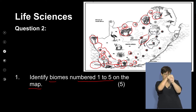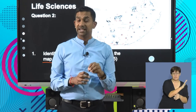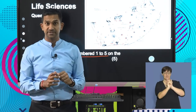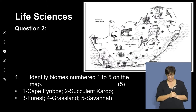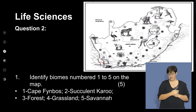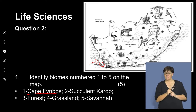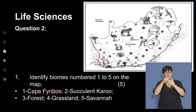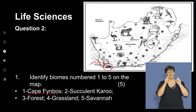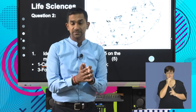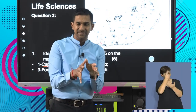Let's check the answers. Area number 1 is the Cape Fynbos, unique to the Cape Town area at the southern tip. It is identified by its species of plants — here we see the proteas. The Cape Fynbos is identified by plants unique to this habitat, often referred to as an ecological hotspot — an area with unique plants found nowhere else in the world, endemic to that area.